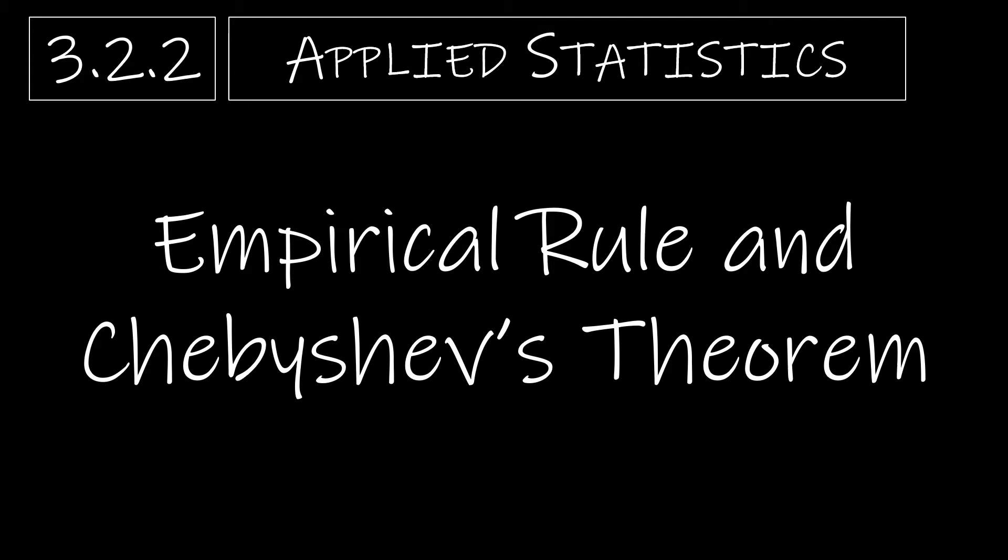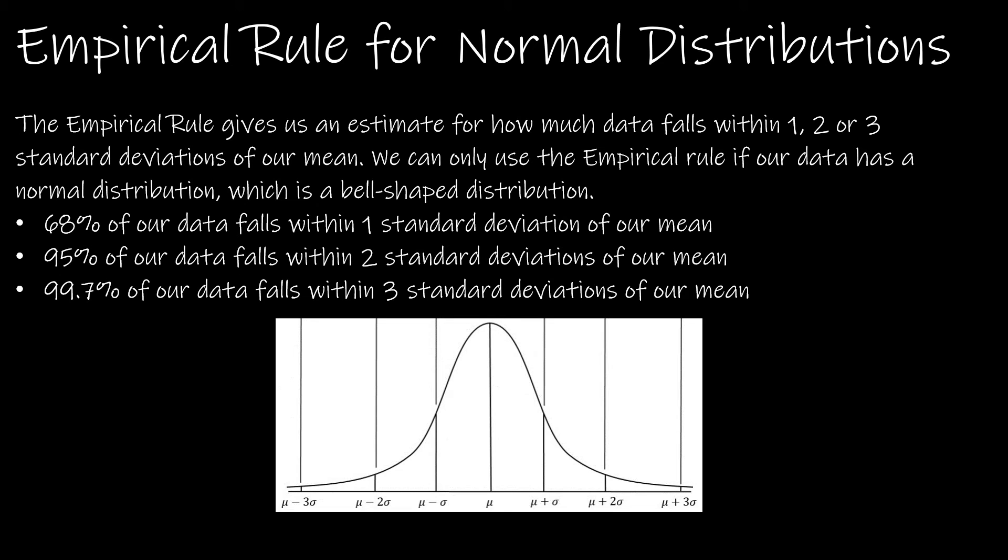We're going to continue our study of section 3.2 by looking at the empirical rule and Chebyshev's theorem. Let's take a look now at the empirical rule for normal distributions.